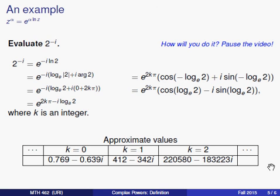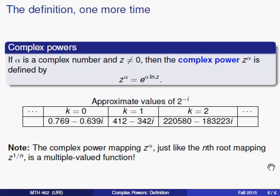We've reached an answer, but this brings up an interesting point. The complex power mapping, z to the alpha, just like the nth root mapping we've already seen, is a multiple valued function. There are multiple answers spit out by this power function. Keep that in mind. In the next video, we're going to take a look at a slightly more complicated example. See you then.